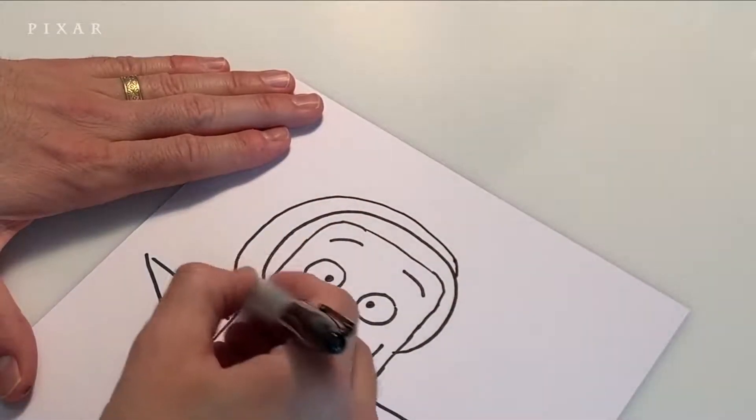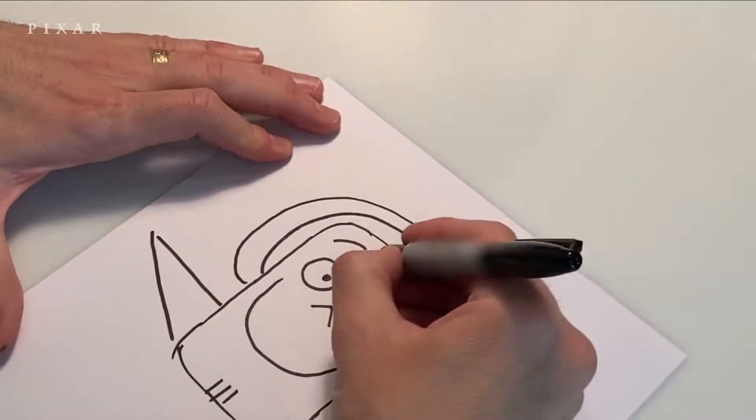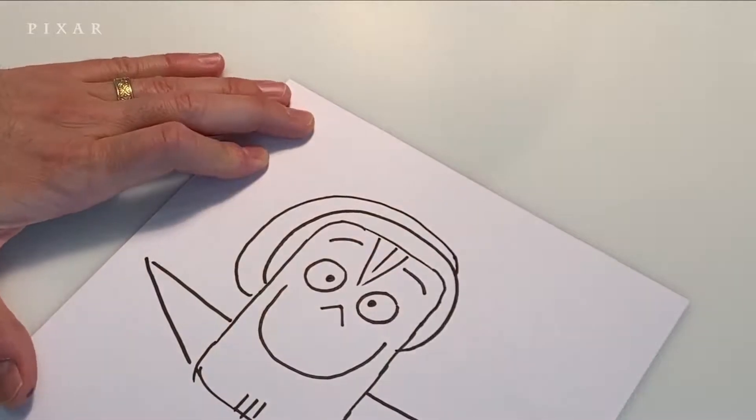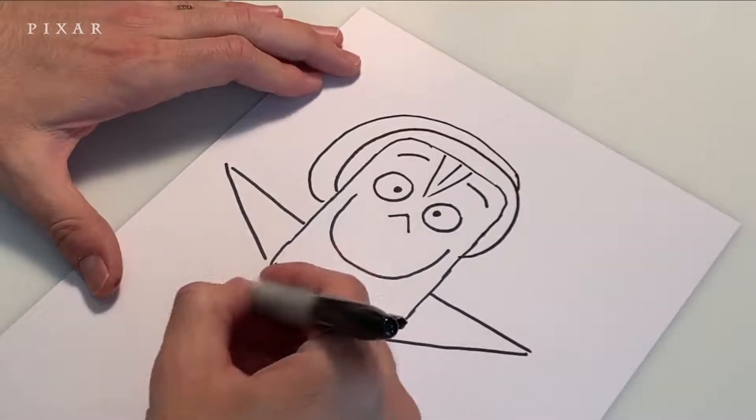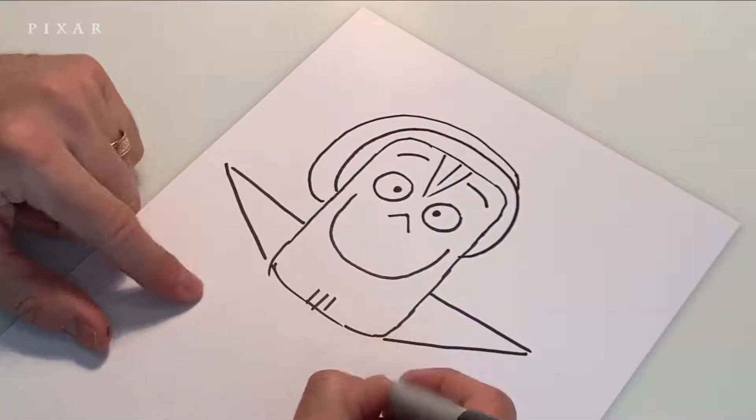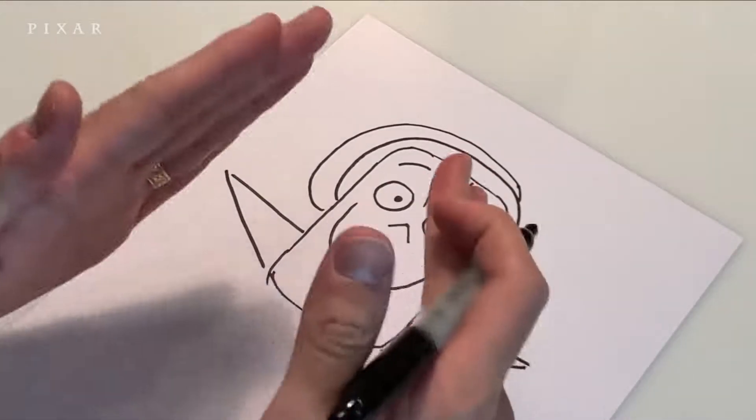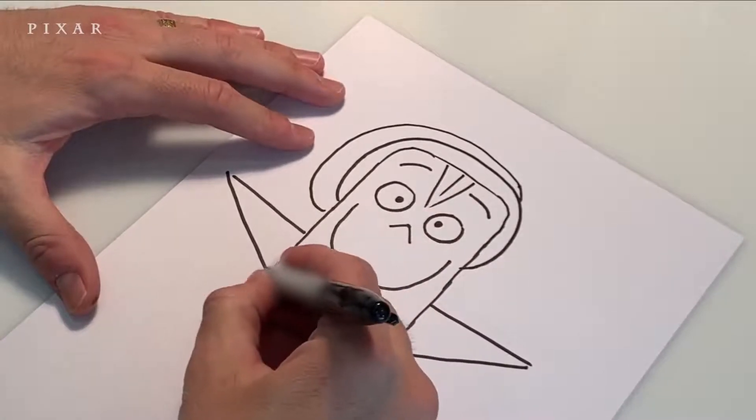Let's give him some hair here. So I want you to do a little V kind of right there for the line down the middle. Now we're going to add his neck, and he's a big guy so he's gonna have a big thick neck. So I want you to do two lines, don't do them parallel, kind of angle them a little bit, it makes it look a little more appealing, so something like that.